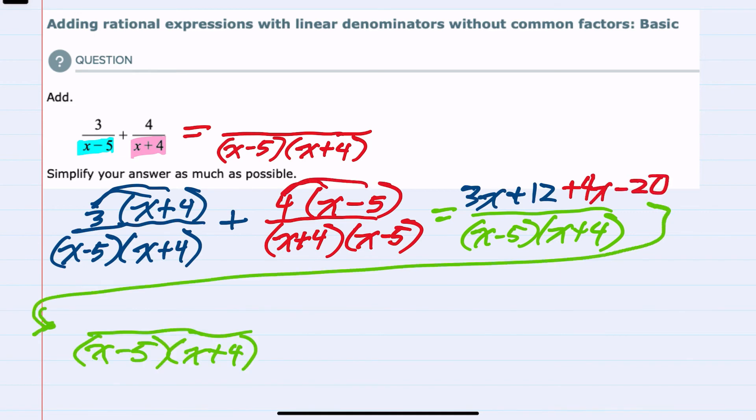From here, I can combine like terms. 3x and 4x will give me a 7x, and then the plus 12 minus 20 will give me a minus 8. We're asked to simplify as much as possible, but there's nothing to factor out in the numerator. And now that we've found the denominator, our answer is 7x minus 8 over that lowest common denominator.